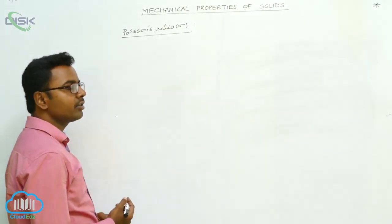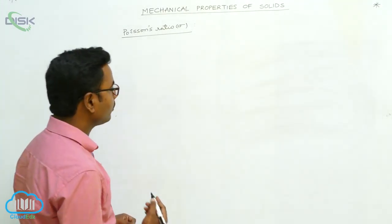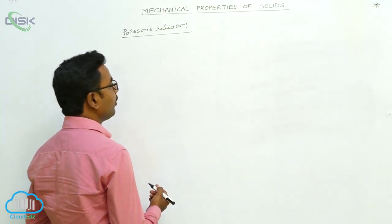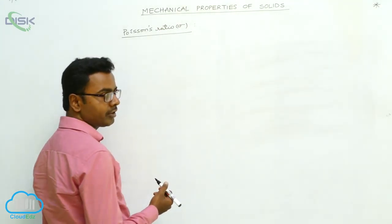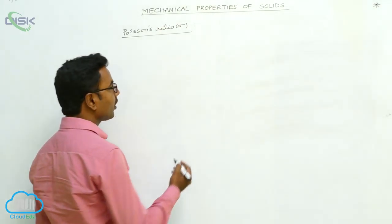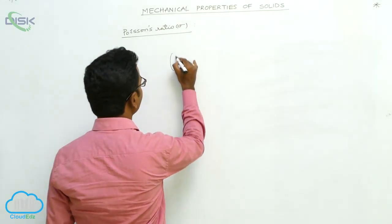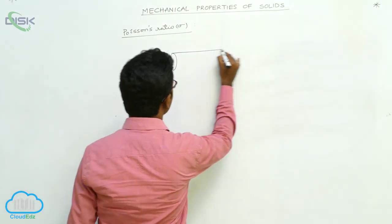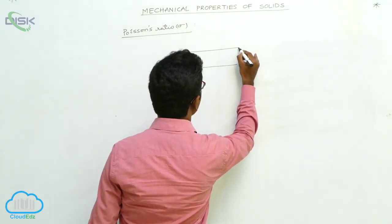Here we define Poisson's ratio sigma. Before going to understand Poisson's ratio, let us consider a wire which is subjected to tensile stress.